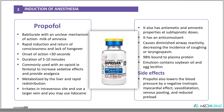Propofol causes diminished airway reactivity, decreasing the incidence of coughing or laryngospasm. 98% of it is bound to plasma proteins. The common side effect of propofol is hypotension. It lowers blood pressure through negative inotropic and myocardial effects, vasodilation and venous pooling, which leads to reduced preload and reduced cardiac output, hence a reduced blood pressure.